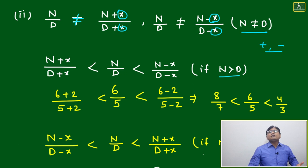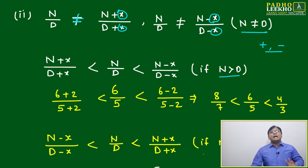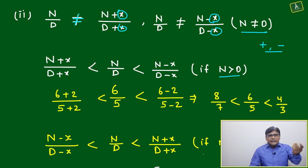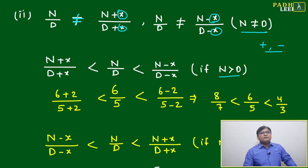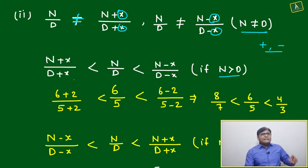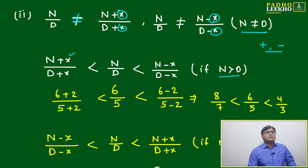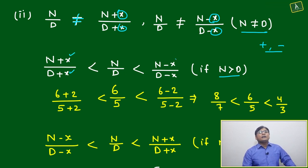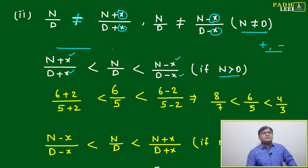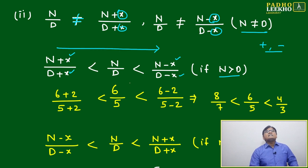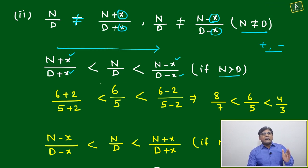Whenever you are dealing with a ratio, always keep two scenarios in mind: N is greater than D, and N is less than D. For the first case, where N is greater than D — if you are adding x to numerator and denominator, or subtracting x from both, the sequence changes accordingly.